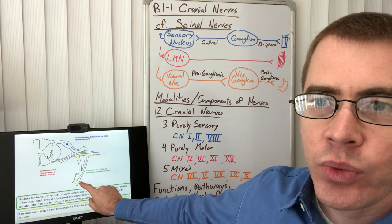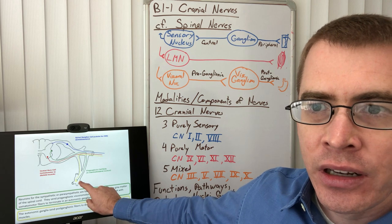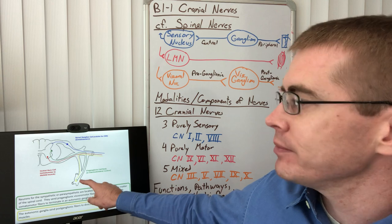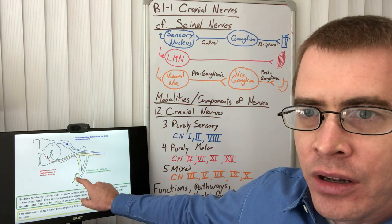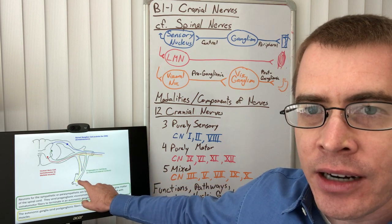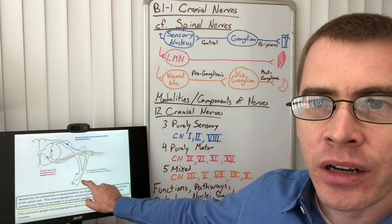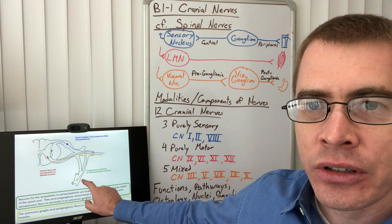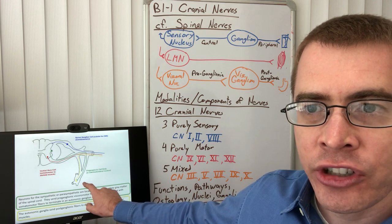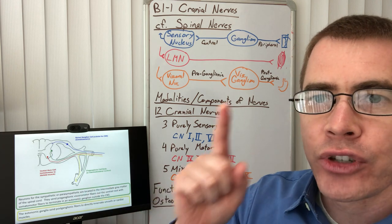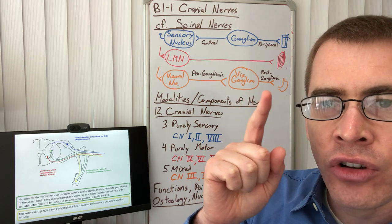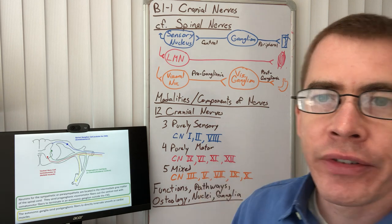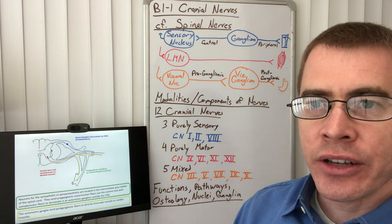We've talked about the IML — the intermediolateral cell column in the thoracic region of the spinal cord — as the location for cell bodies of the sympathetic system. Here in this image, we can see the sympathetic chain located along the vertebral bodies. From there, that pre-ganglionic process synapses on the visceral ganglion, which then sends out its post-ganglionic process to whatever visceral organ it's going to innervate.